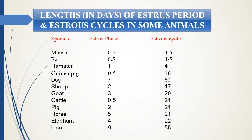Regarding the length of the estrus cycle and the duration of the estrus phase in some species: in mouse, the estrus phase is only about half a day — approximately 12 to 14 hours — and the total cycle length is 4 to 6 days. In rat, the total cycle length is 4 to 5 days and the estrus period is also about 12 hours, a half day.